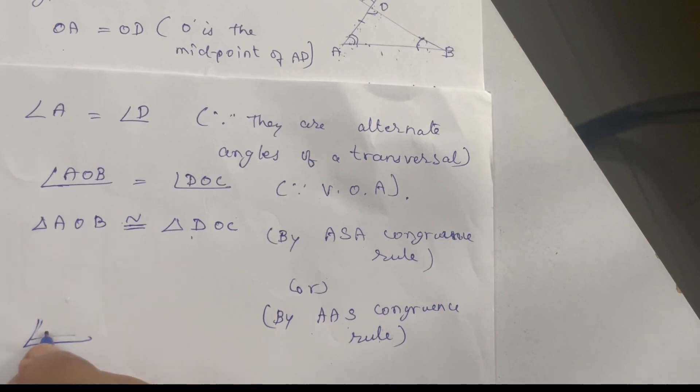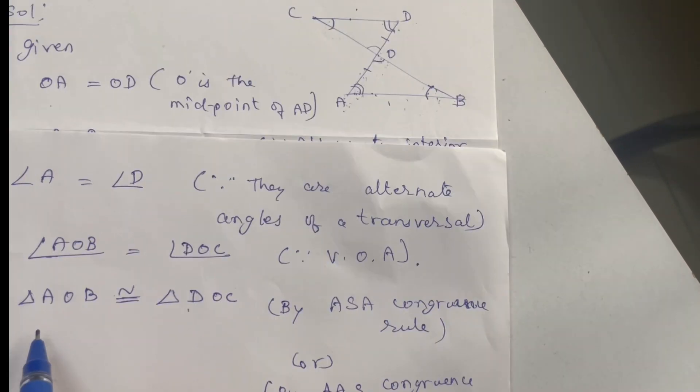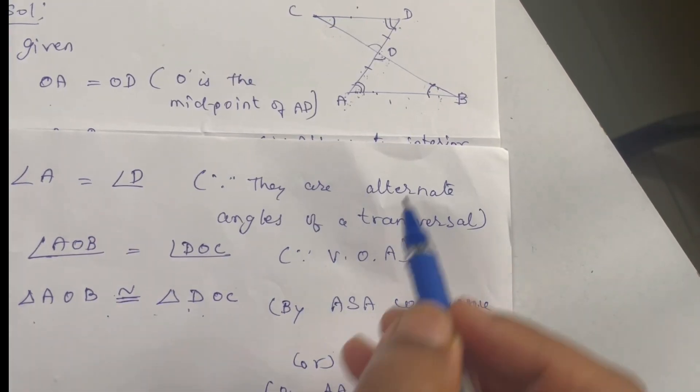Angle B equal to angle C. Triangle AOB and triangle DOC, corresponding all the parts are equal.